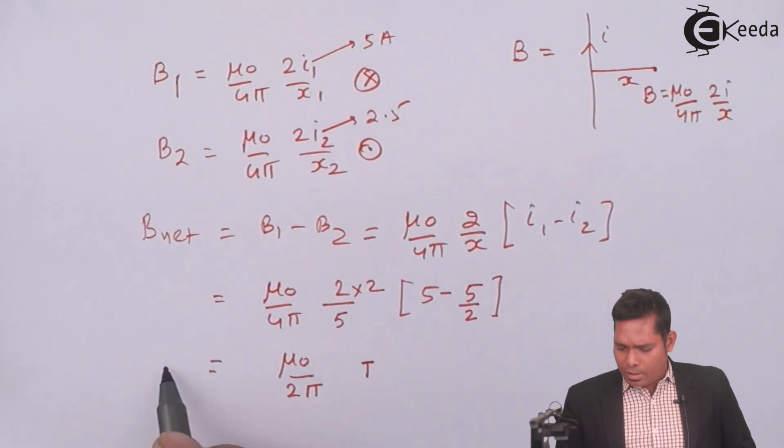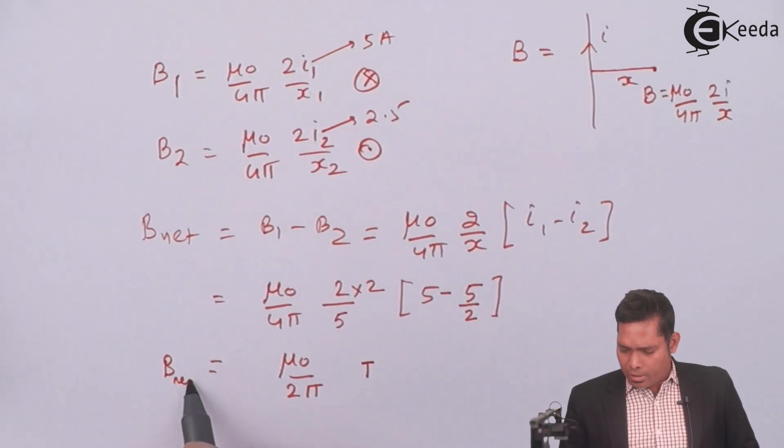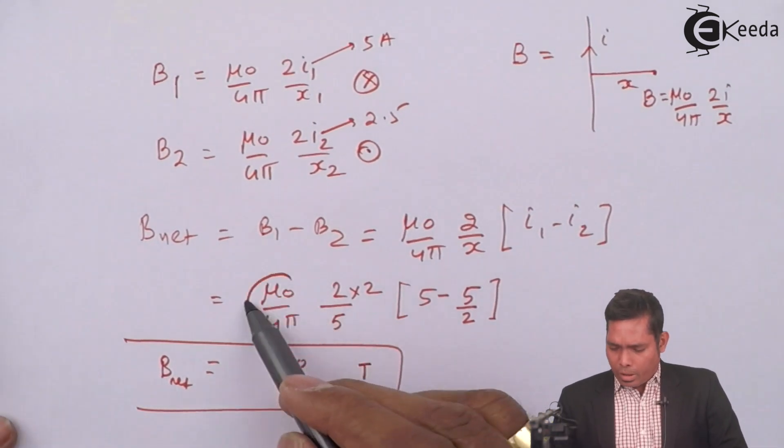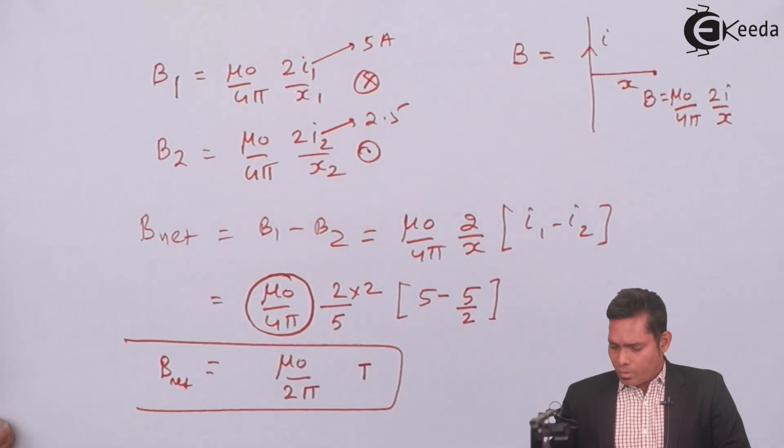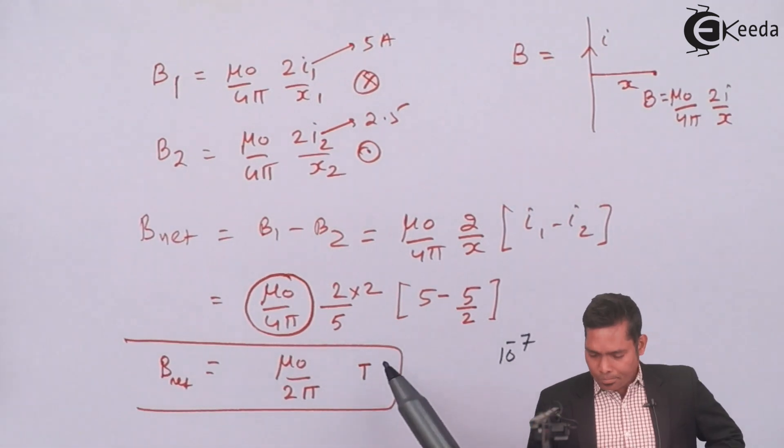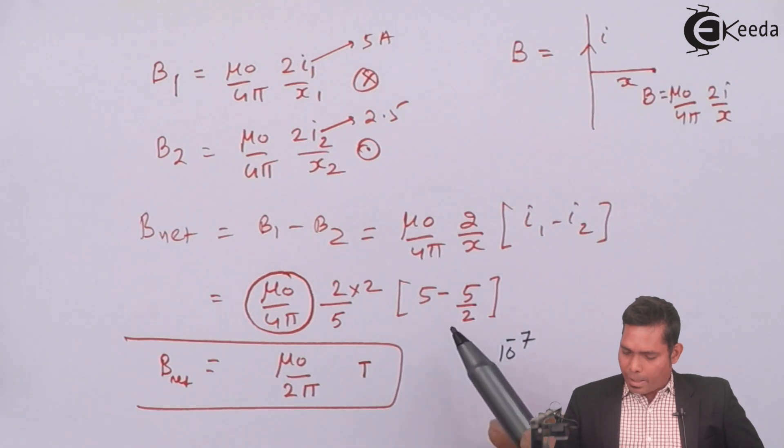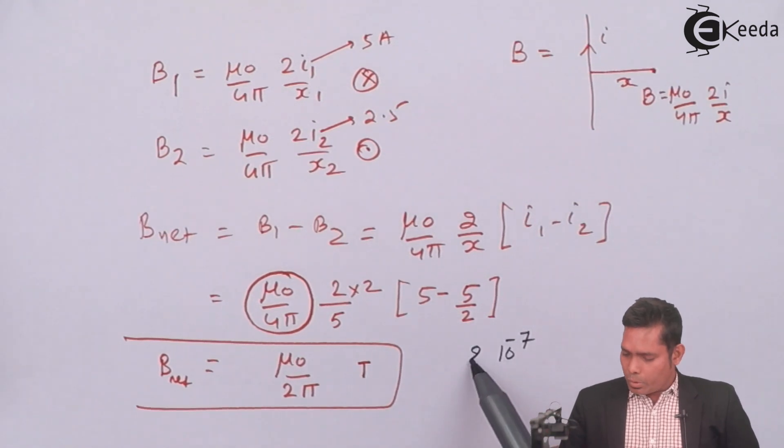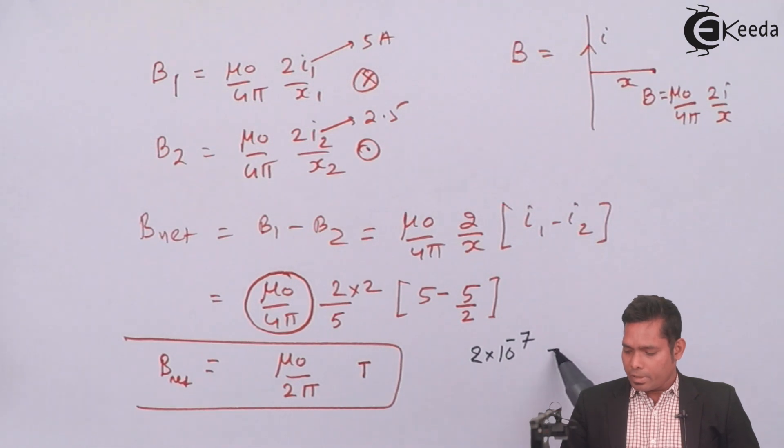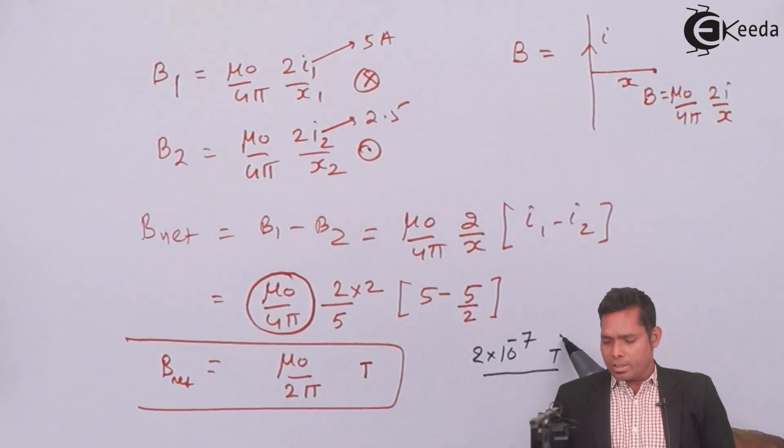If this is in Tesla, this is the answer to this question. In the form of the values, if I put, then this value can be taken as 10 raise to minus 7. And then you can multiply 2 to this, but 2 into 10 raise to minus 7 Tesla. This is all this. This is the answer.